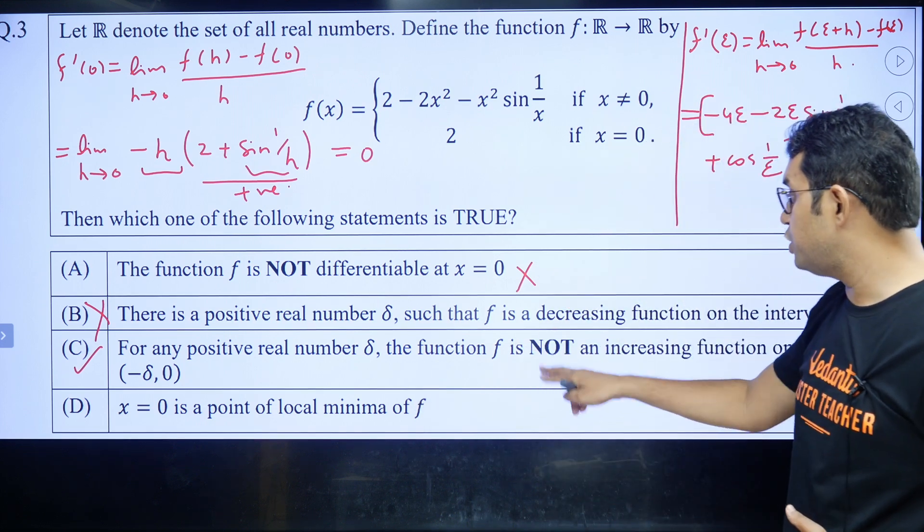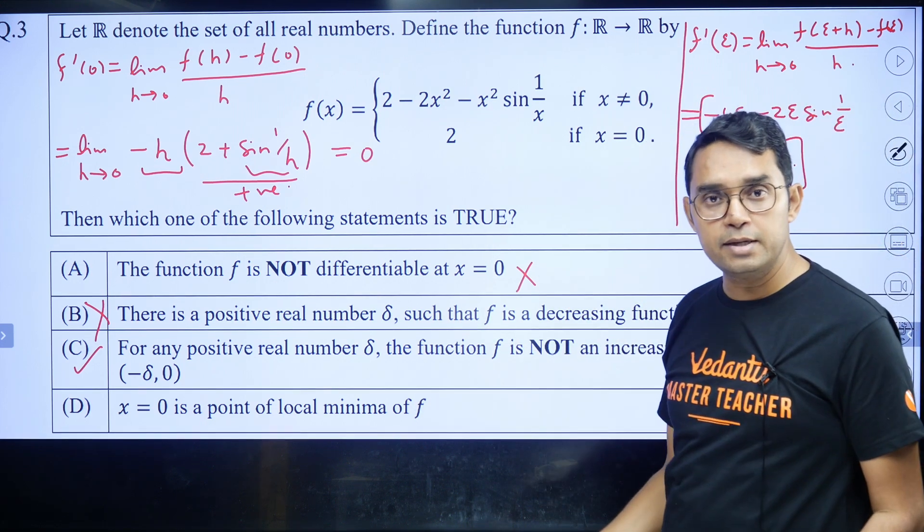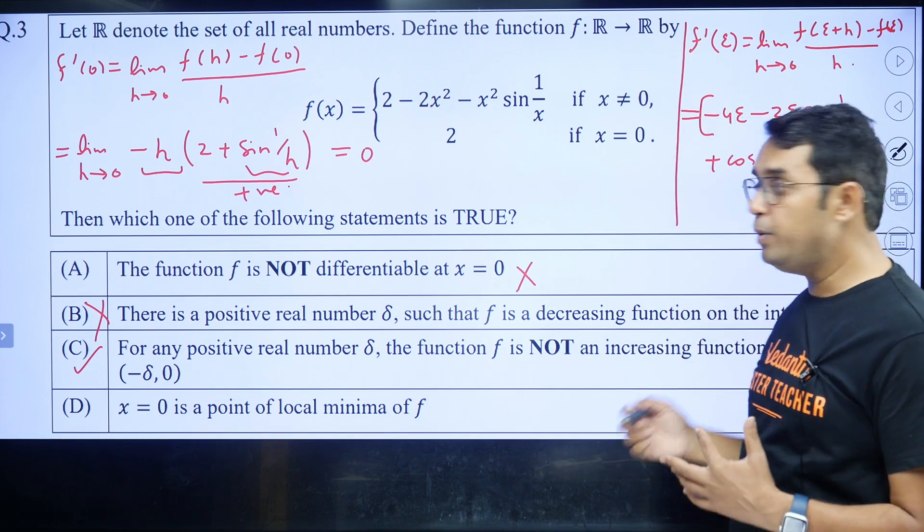For any positive real number δ, the function is not an increasing function. It is actually neither increasing nor decreasing - it will be oscillating. The derivative value will be oscillating.